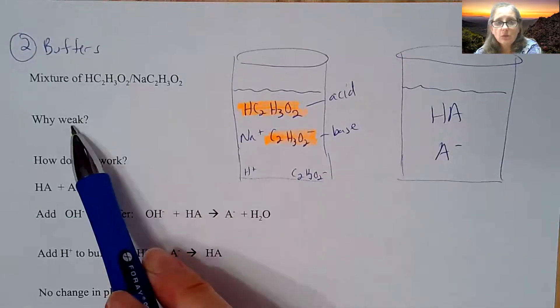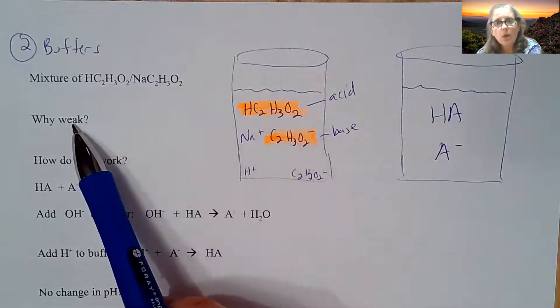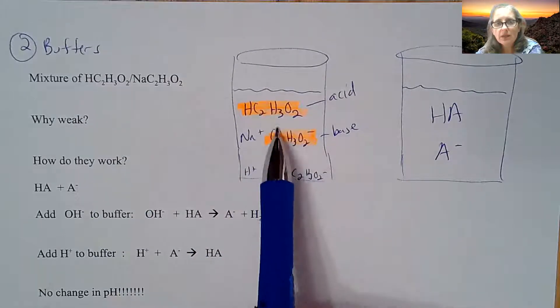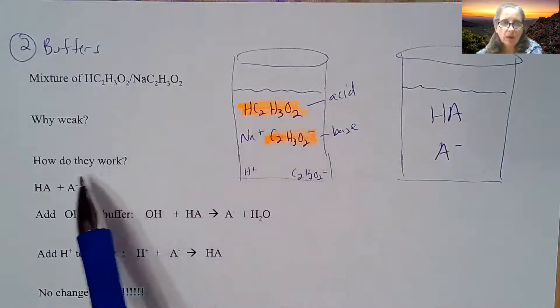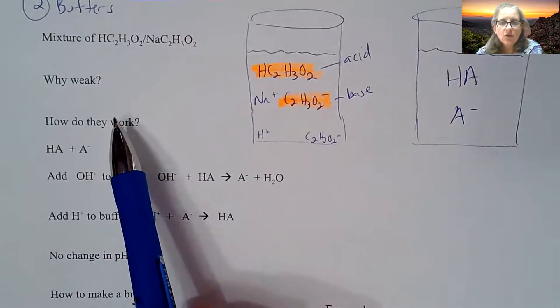So why do we use weak? We'll talk a little bit more about why they're weak, mostly because they only partially dissociate so they don't make the equilibrium go one way or the other. But how do they generally work?